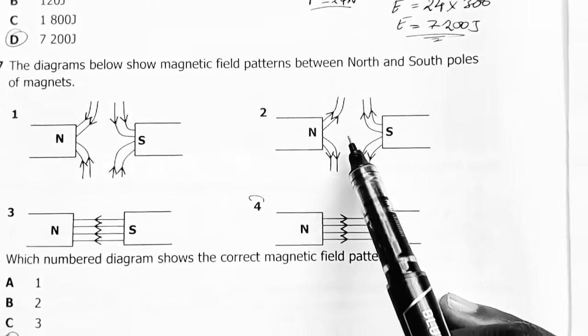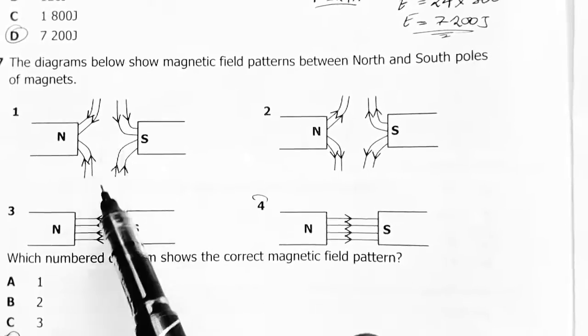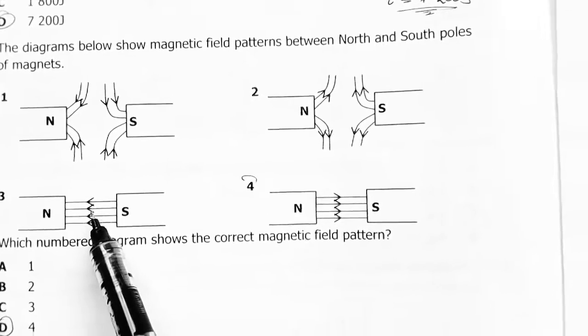Four was my answer. Four is my answer. Study the patterns, then you'll notice this is supposed to attract, this is supposed to attract. This is not correct because the arrows are supposed to point south.